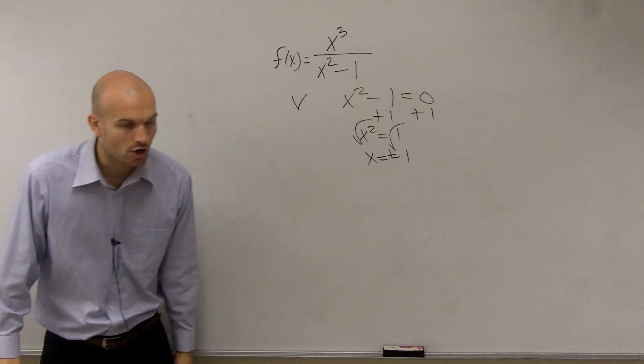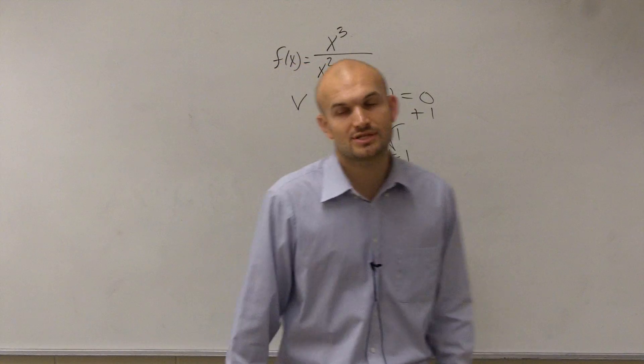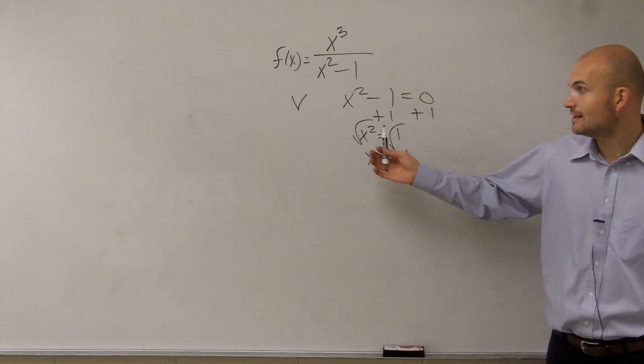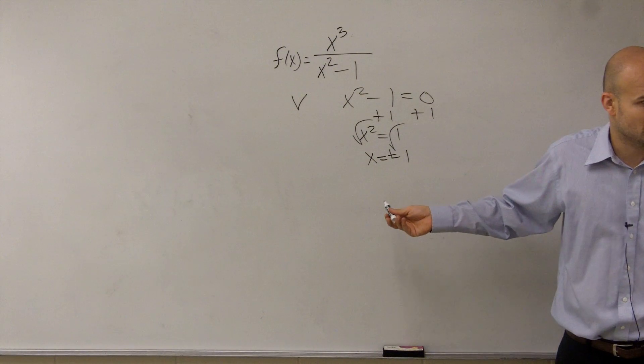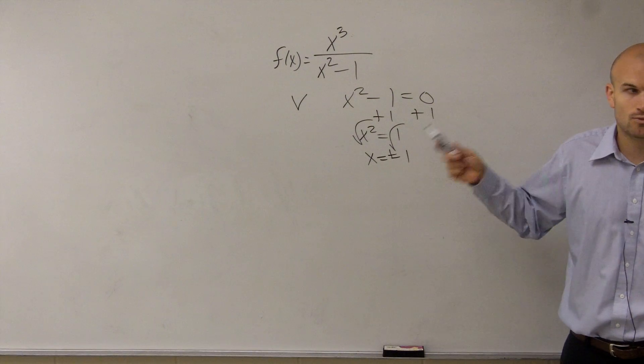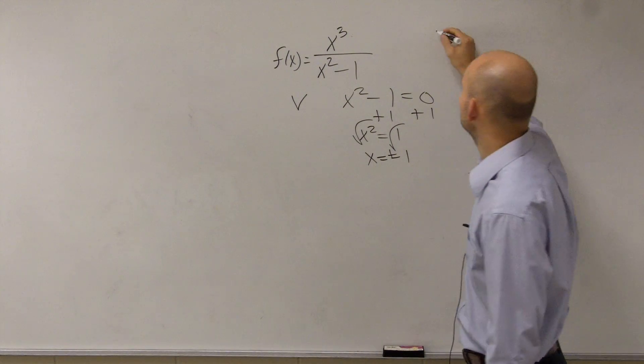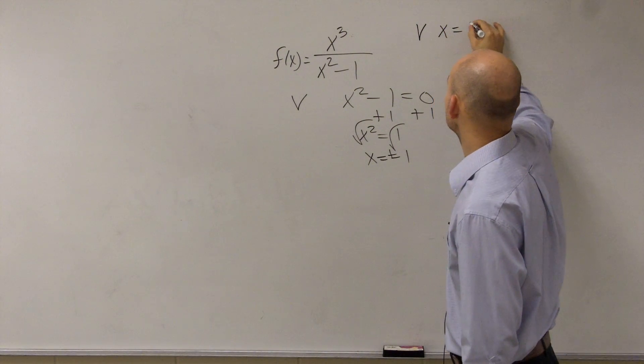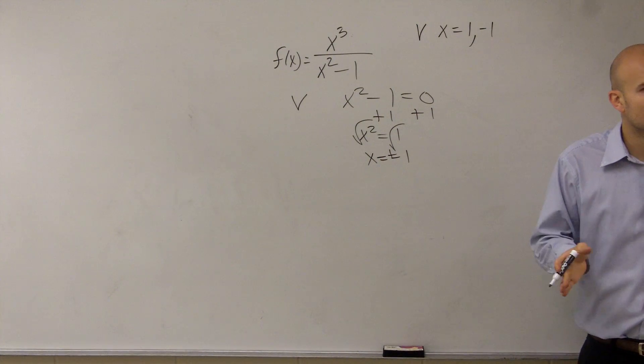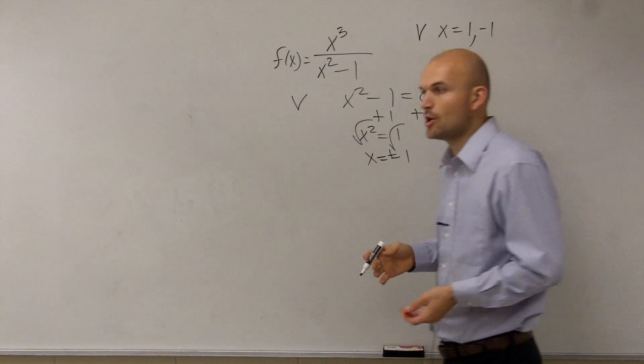You guys remember, beginning of the year, I harped on you so much about when introducing a square root that you have to include the plus or minus. This is really going to hurt you in this section if you do not include the plus or minus. Because we do not have just one vertical asymptote. We have two vertical asymptotes, x equals 1 and at negative 1. Those are two points that are not a part of our domain.